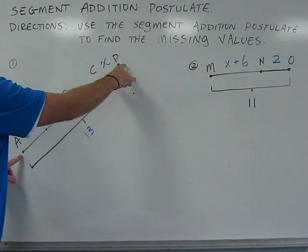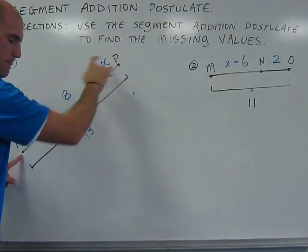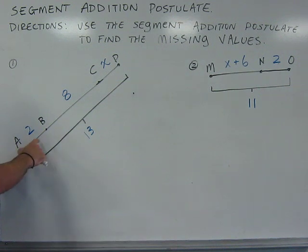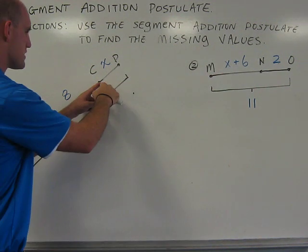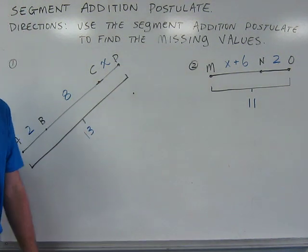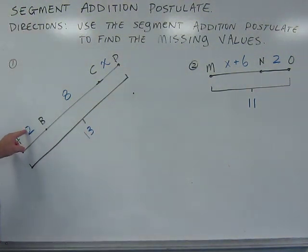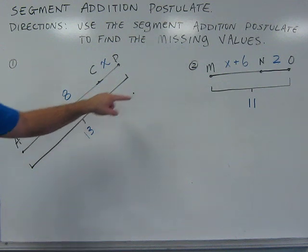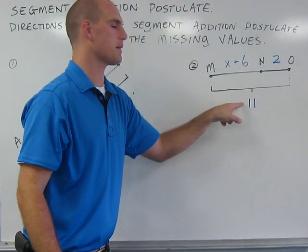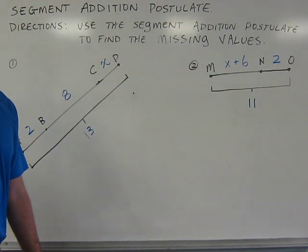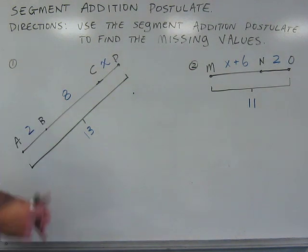So, segment AD can be found by adding up segment AB plus segment BC plus segment CD. In these two examples, I've used blue to denote the lengths of each individual segment. We're going to be using those lengths to find the missing values, or X.